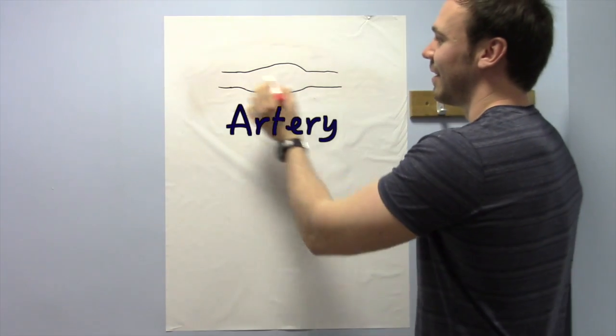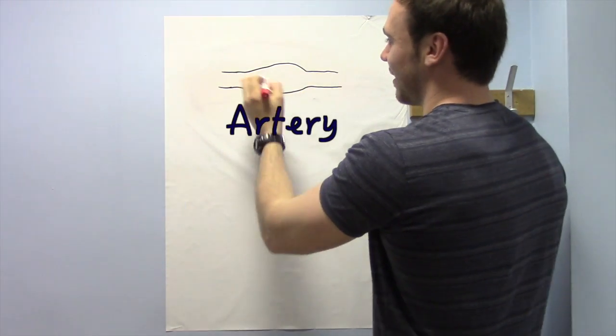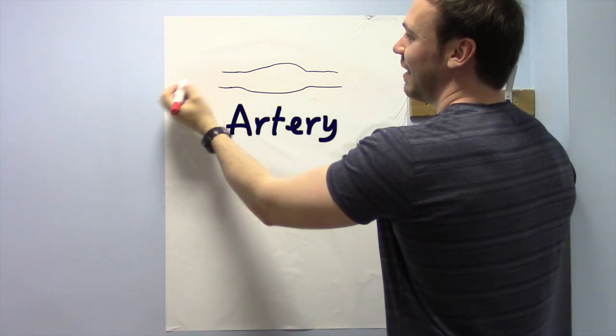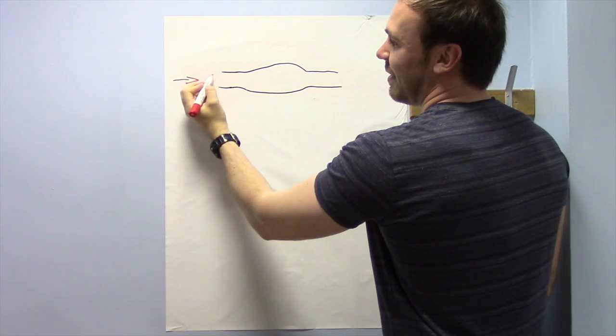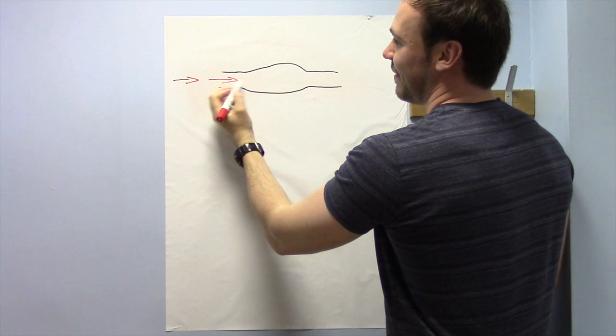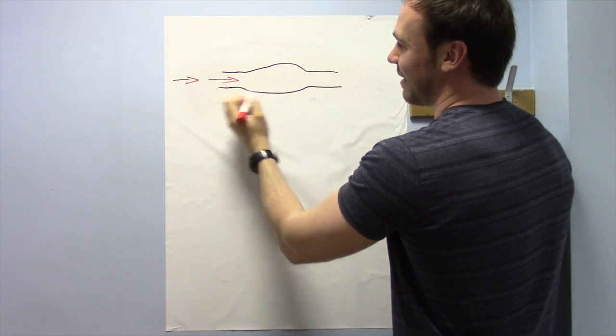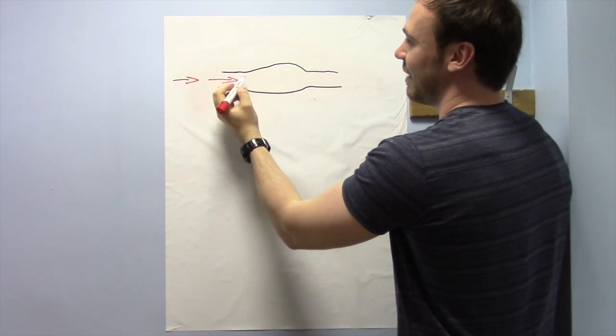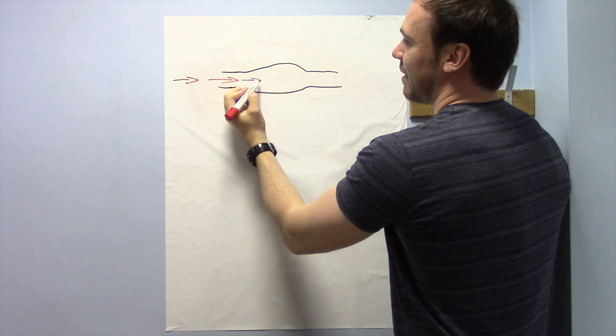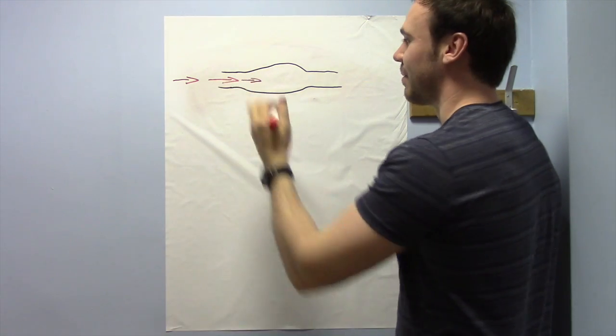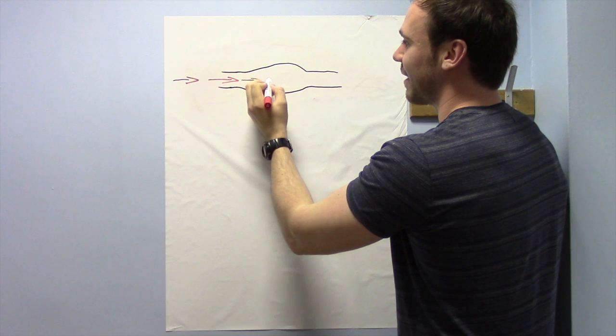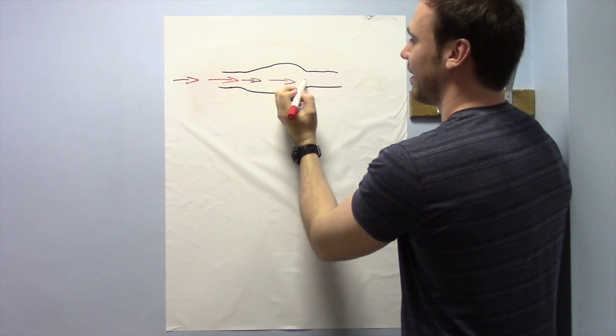So if you imagine this is an artery here, and I'll explain what this bump is in a second, but if this artery's got blood coming from the heart from this side, so this is blood flow coming through here, the compliance or stiffness as they're talking about is the artery's natural ability to expand as a pump of blood comes through it, so it gets bigger to allow the volume of blood to go through.